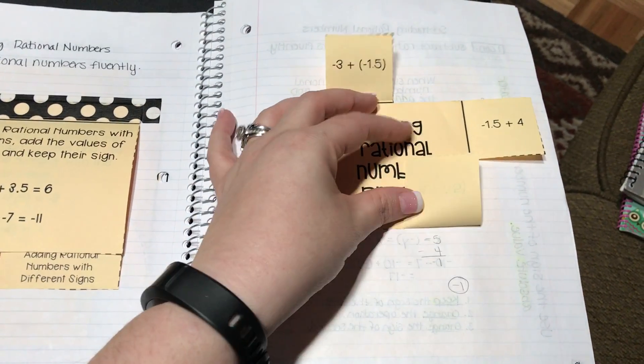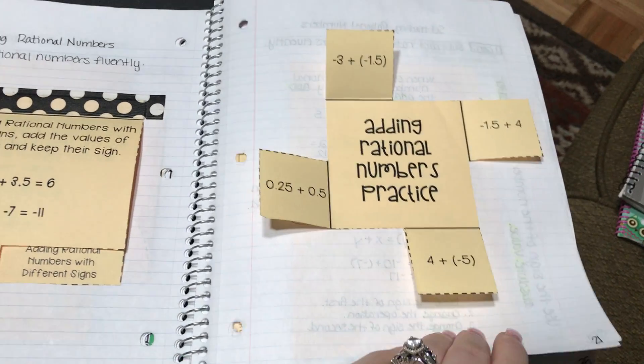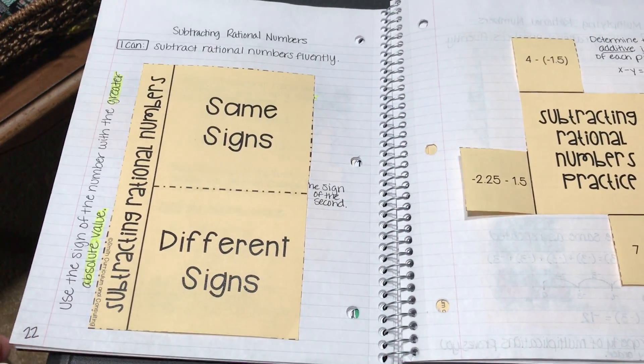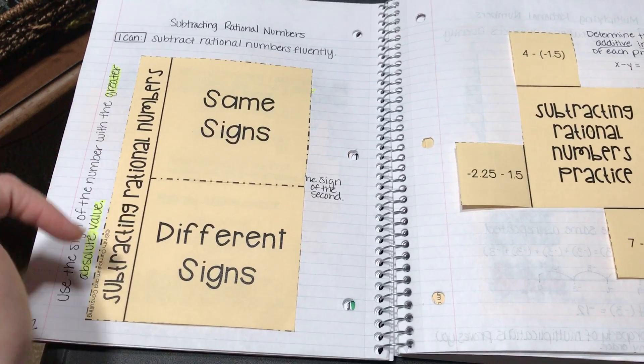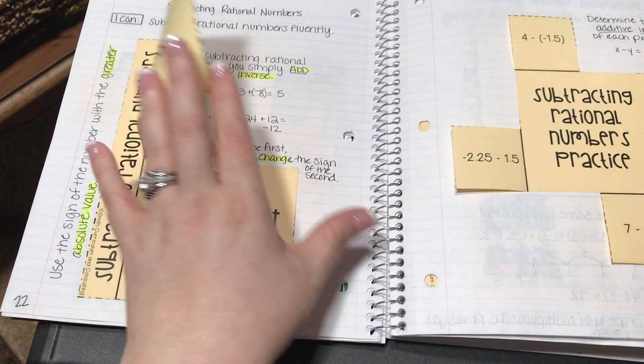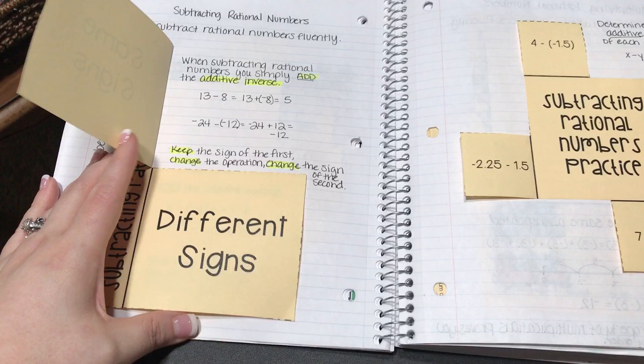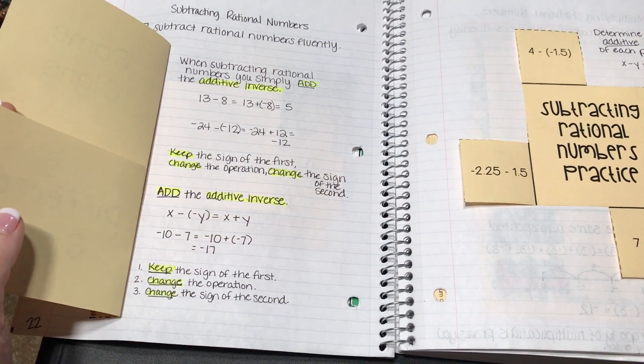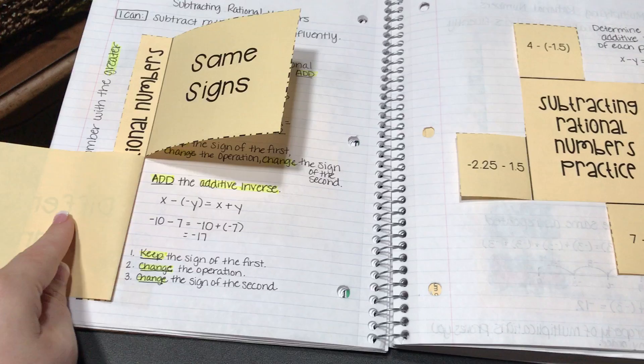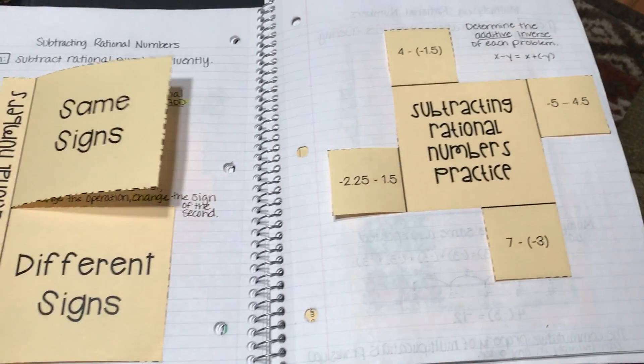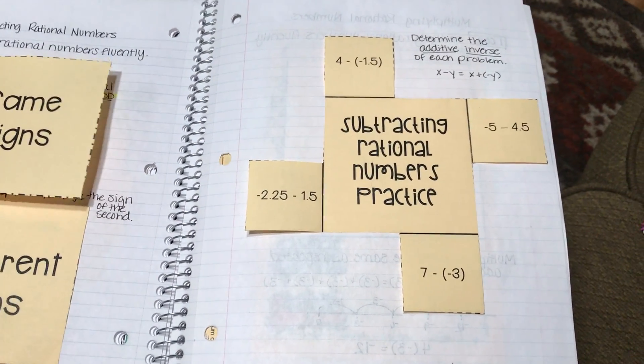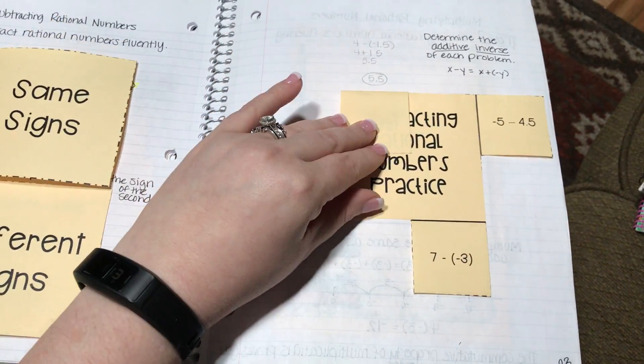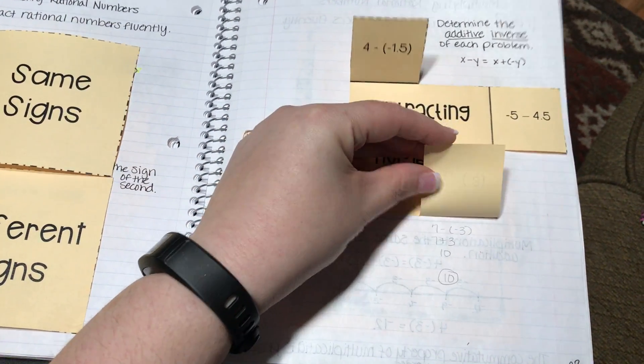Then we move on to subtracting rational numbers with the same and different signs. Just some cute little notes on the side highlighting important words, then the notes underneath with more highlighting. I like to do that to help the flow along. Again another practice pinwheel where they just write the information below.